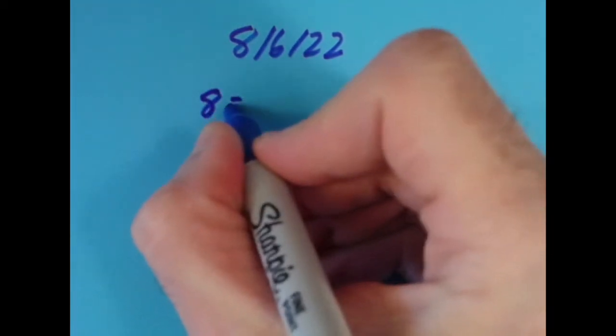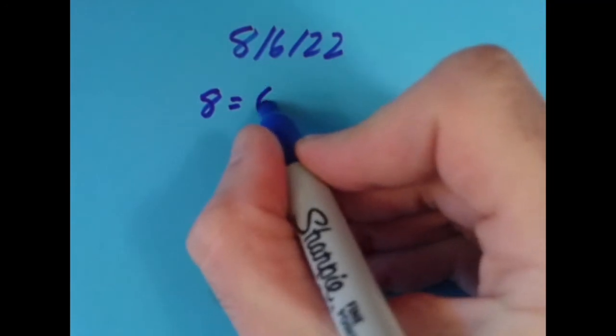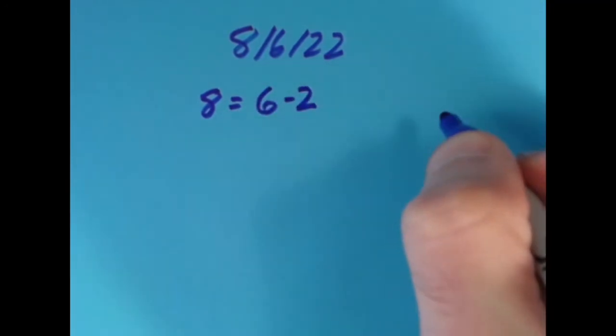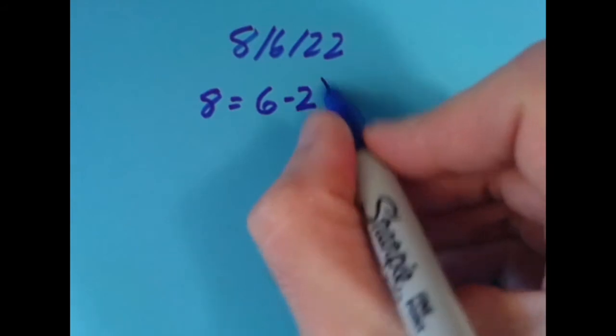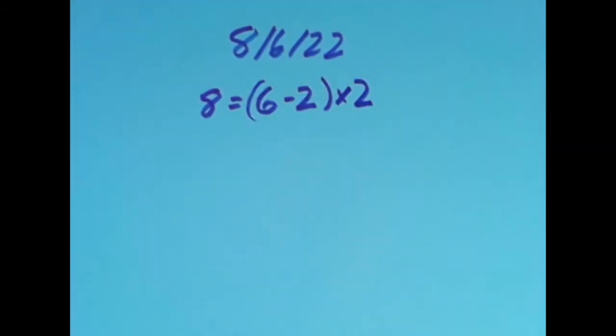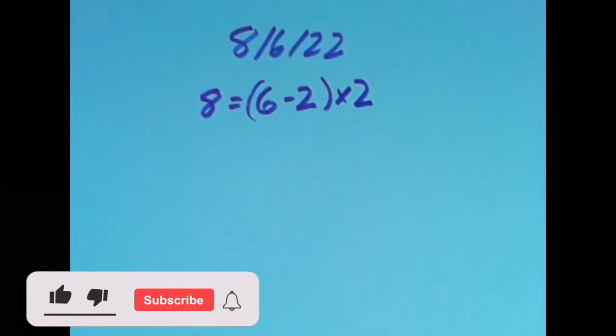So we have a bunch of even numbers today. What I just said was 8 equals 6 minus 2. 6 minus 2 is 4. I can take all that 4 and multiply it by 2 to give us 8. So that's what I did.